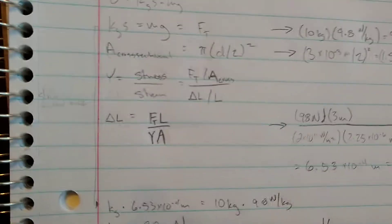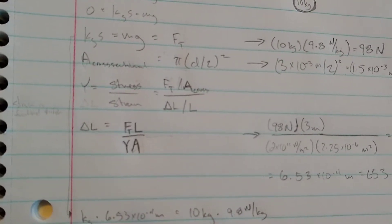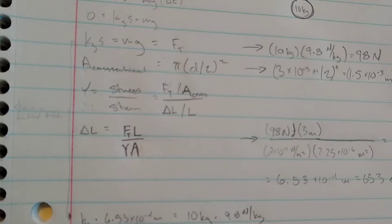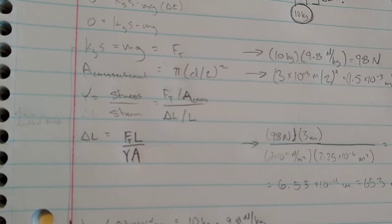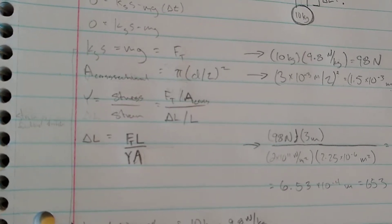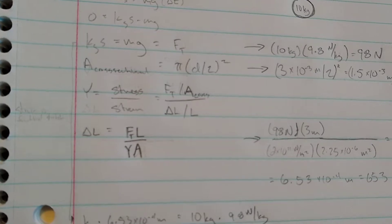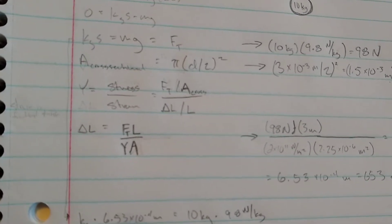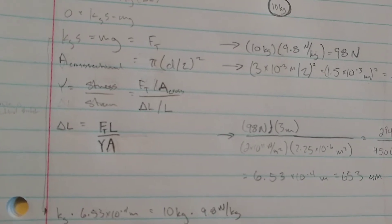Young's modulus is defined by stress, which is the force of tension divided by the cross-sectional area, the last two things we calculated. And the stress is divided by the strain, which is the fractional stretch, the change in length divided by the length of the wire.